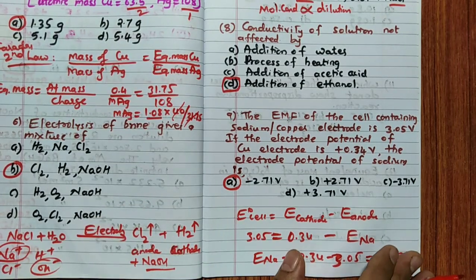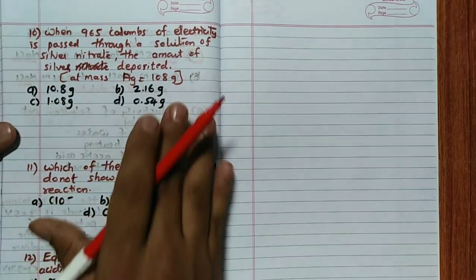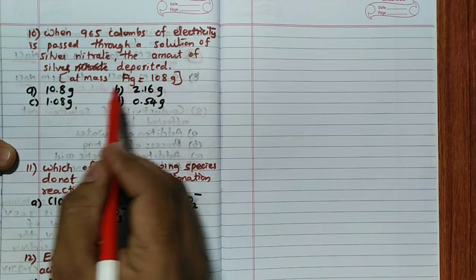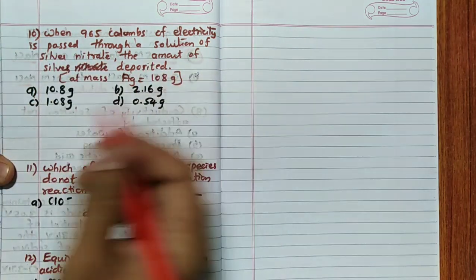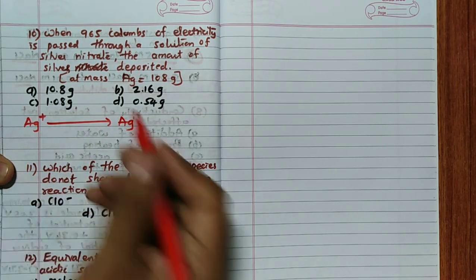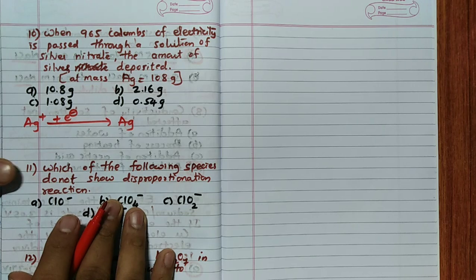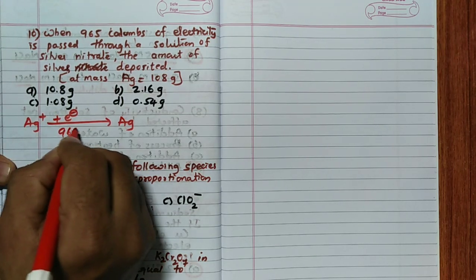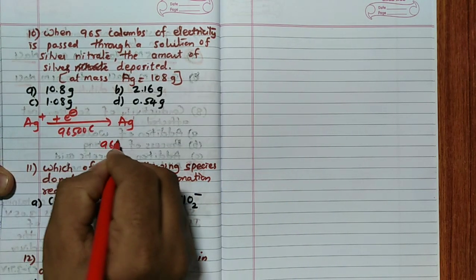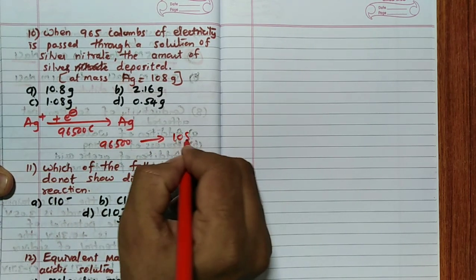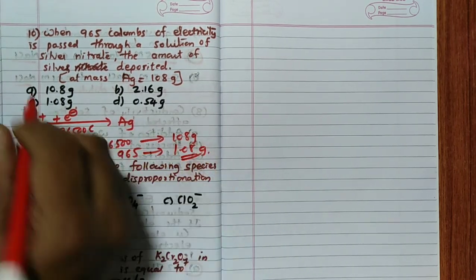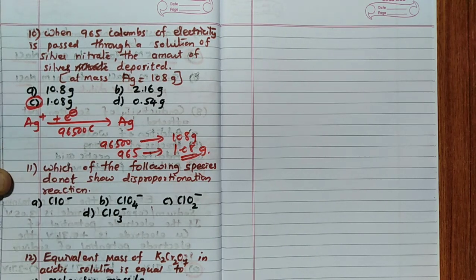The tenth question: 965 coulombs of electricity is passed through a silver nitrate solution. Ag⁺ + e⁻ → Ag. Since 96500 coulombs deposits 108 g of silver (1 mole), then 965 coulombs deposits 1.08 g of silver. The answer is option C.